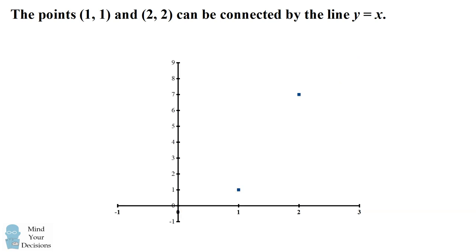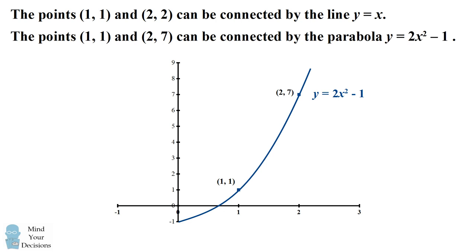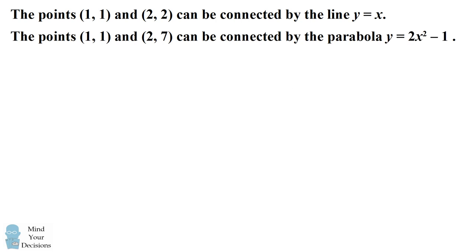Similarly consider the points (1, 1) and (2, 7). They can be connected by the parabola y = 2x² - 1. These are examples of connecting points with a polynomial that has integer coefficients.